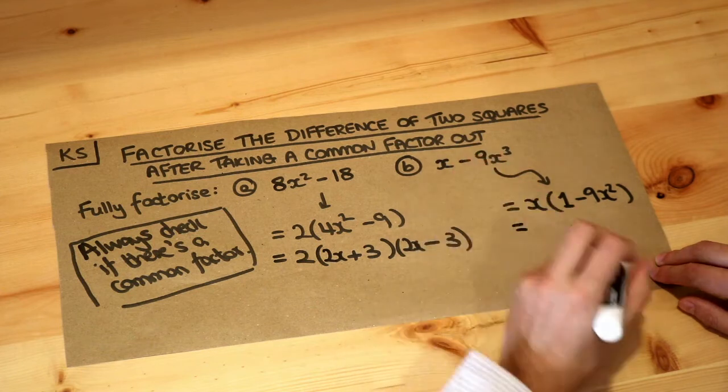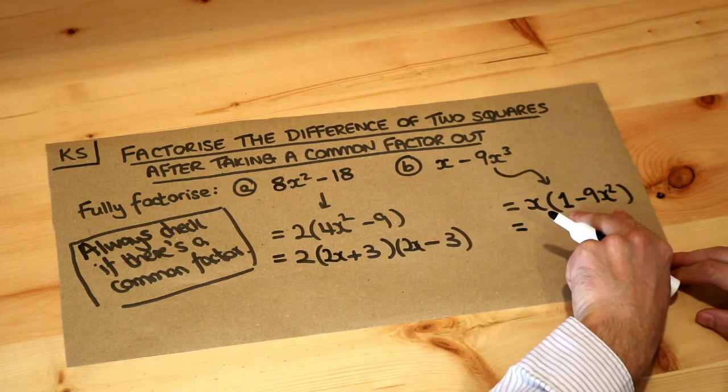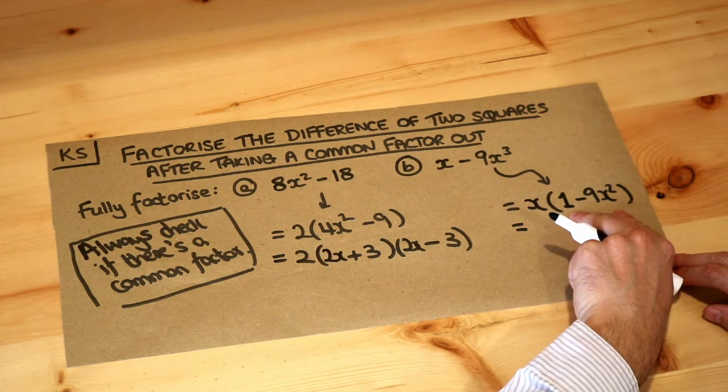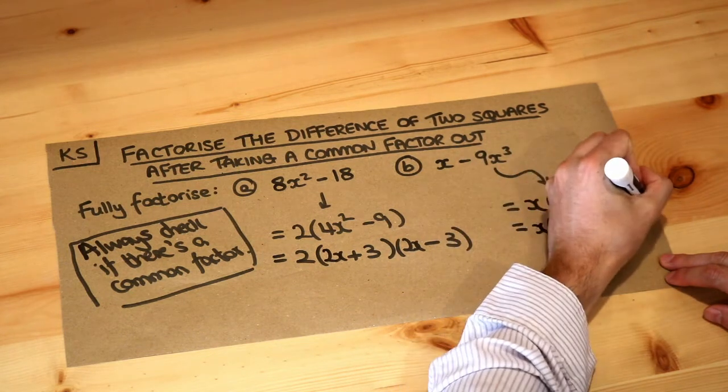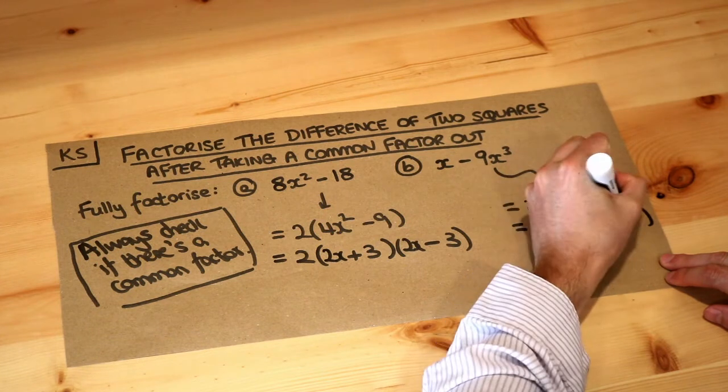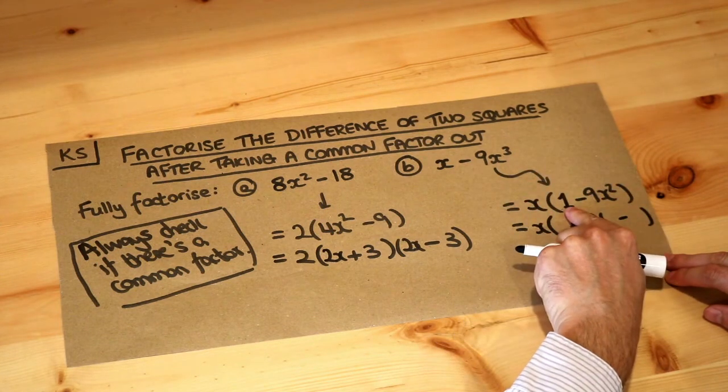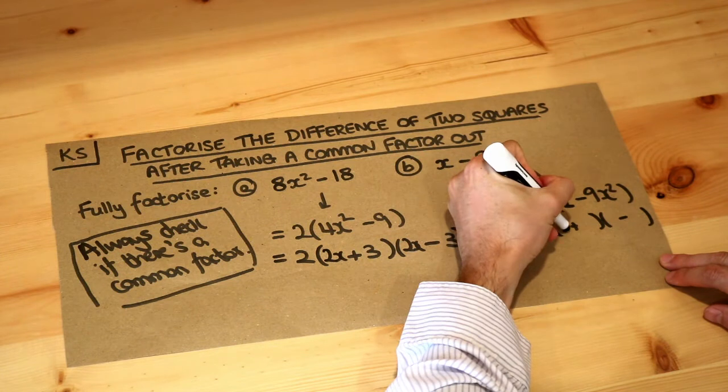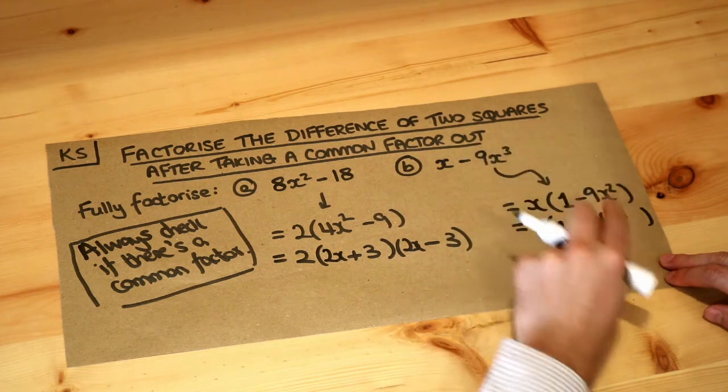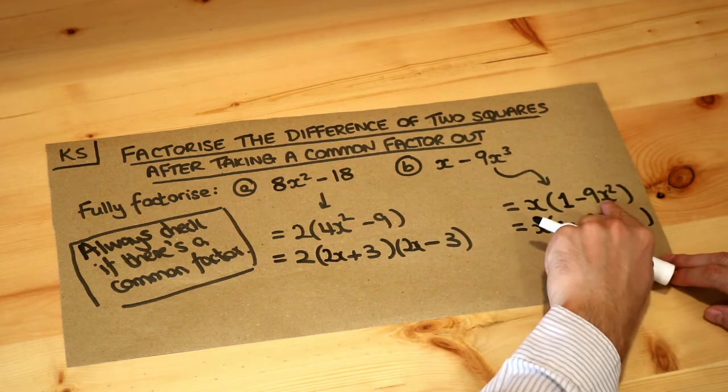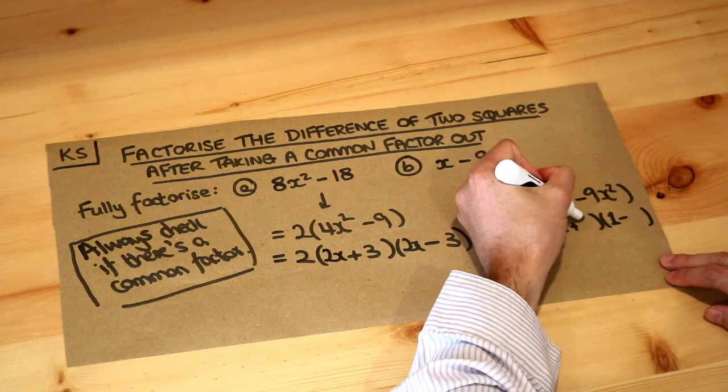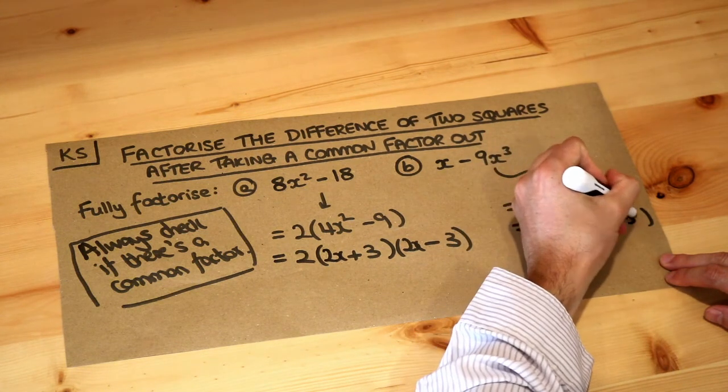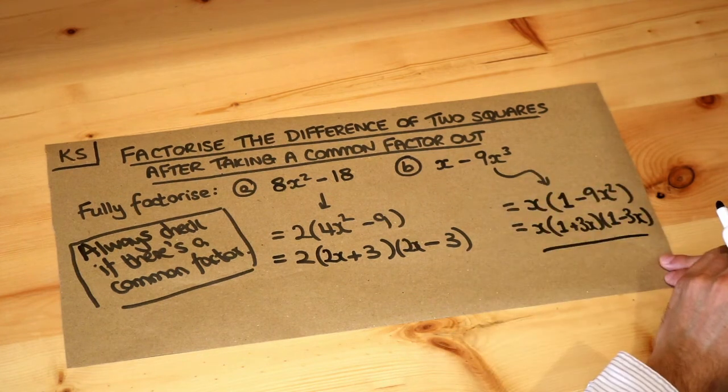And again we check in this bracket, could we factorise this further? Well yes we can. It's a difference of two squares again. So we have two brackets, one plus, one minus. We do the square root of the first thing which is 1, so we put the 1 as the first thing. Don't get the order the wrong way around. And what's the square root of 9x²? Well, 3x times 3x is 9x², so you put the 3x there. And that is the final answer.